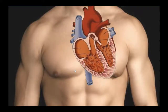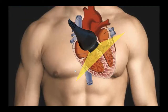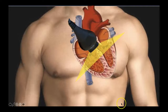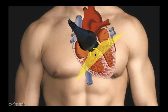Now to get your next view — the parasternal short axis — you're going to start with that long axis position and then flip your probe 90 degrees. Whereas you had it to the left of the sternum with the probe marker facing the patient's left hip, now you turn 90 degrees and your probe marker faces the patient's right hip. That was long axis cutting through all the chambers; now this is short axis, just getting a cross-section of the heart.